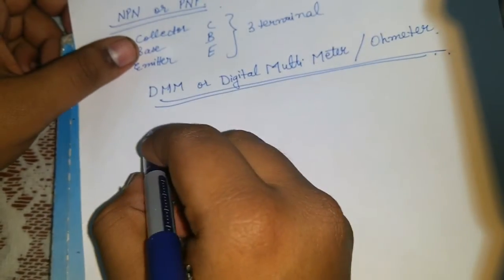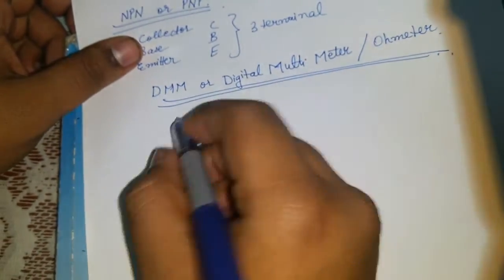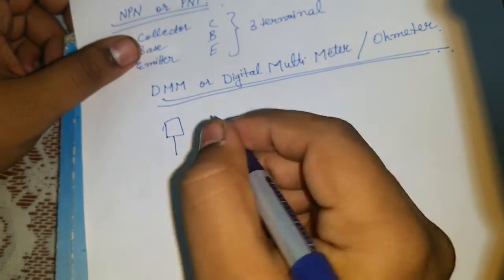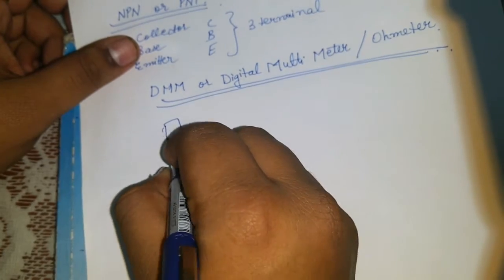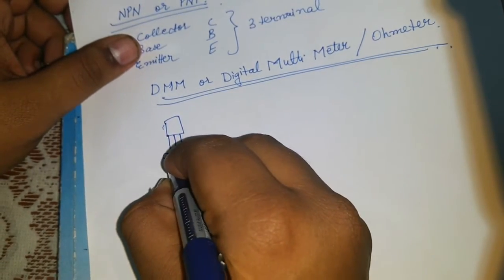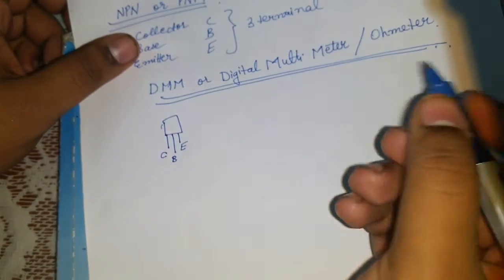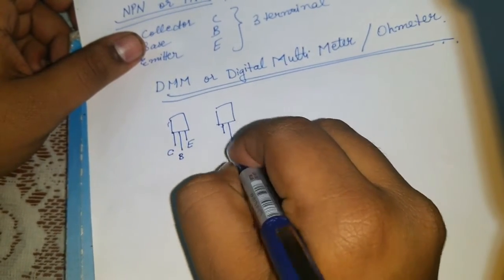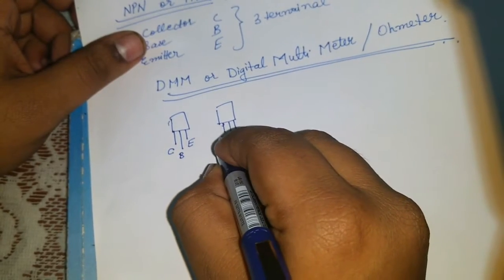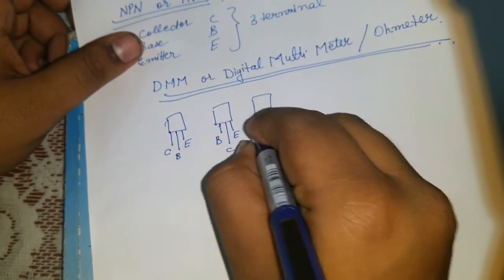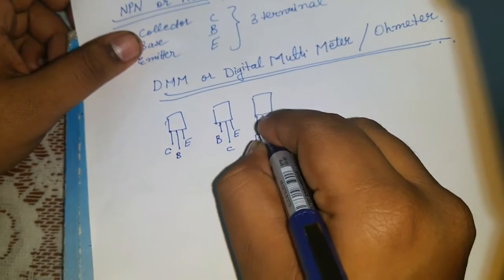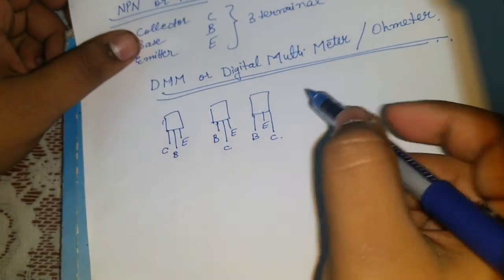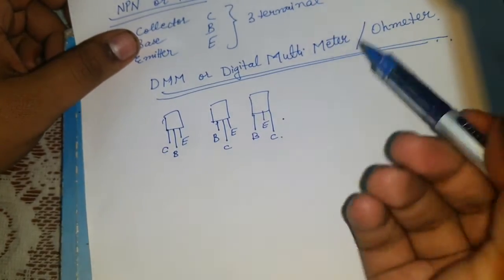So there is a simple technique using a DMM or digital multimeter or ohm meter. It is not necessary that the base would be in the middle every time. The orientation mostly is like this, but this is not necessary. The transistor can be like this also, or this BEC.